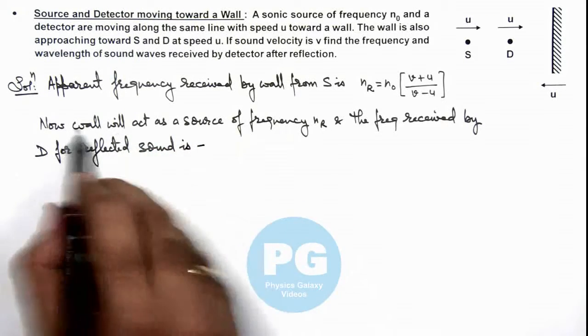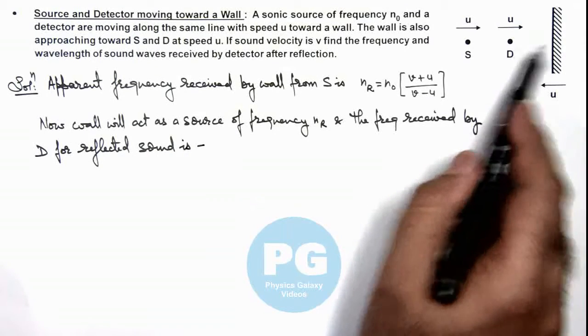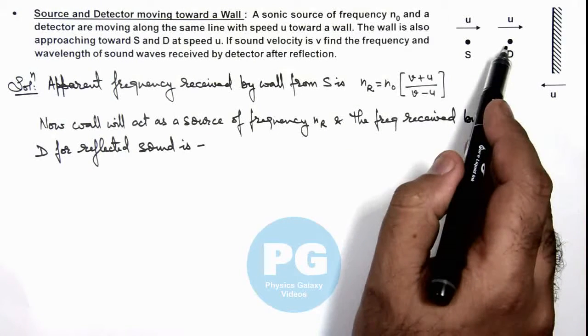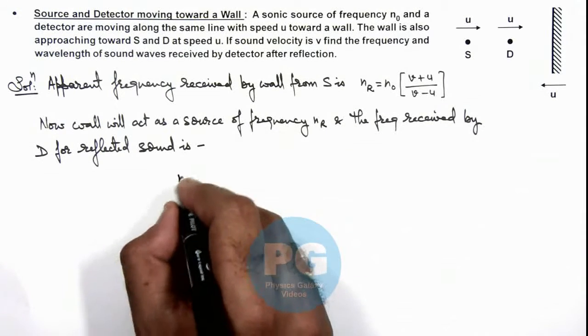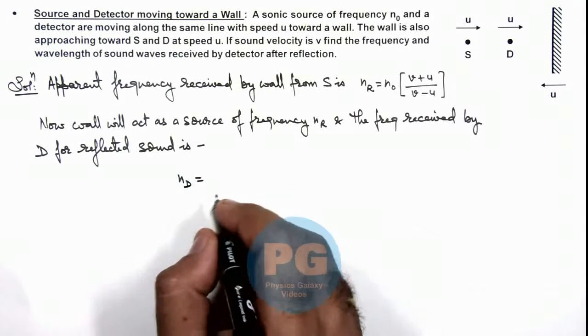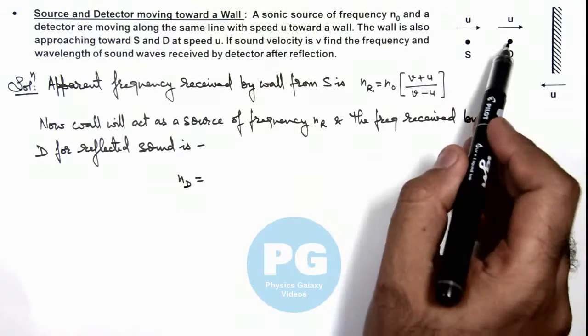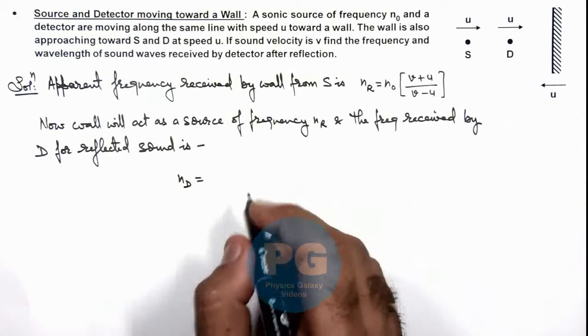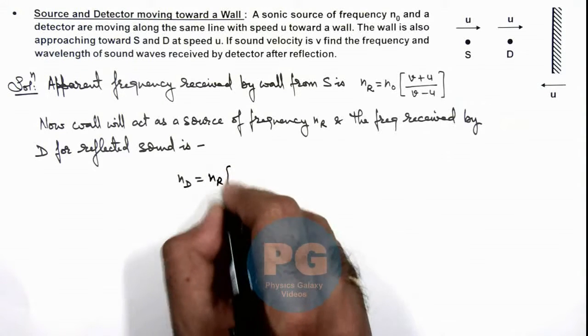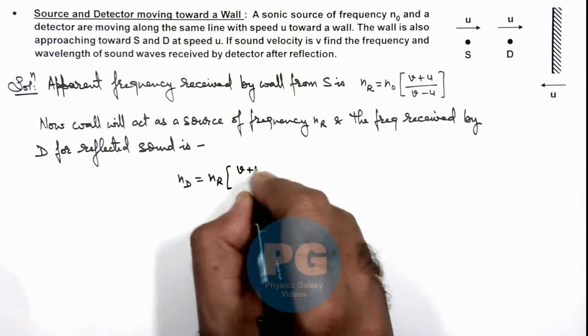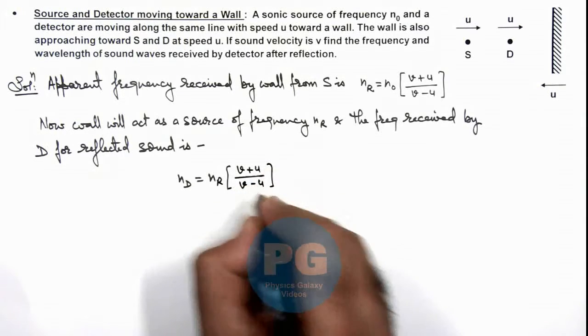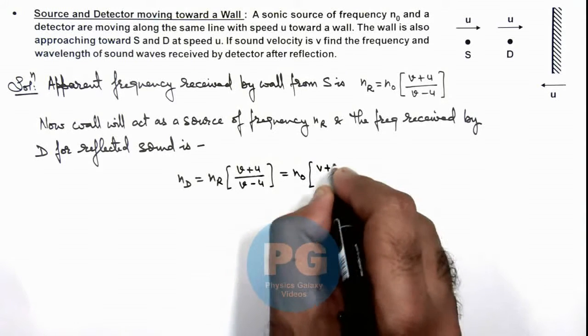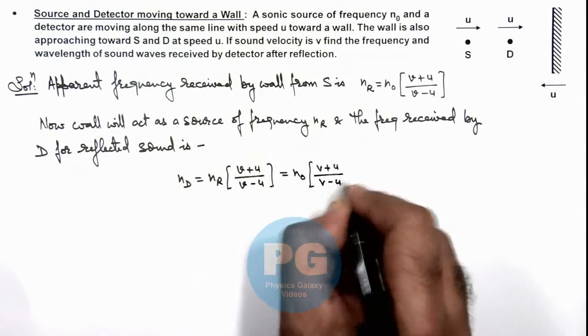As now wall is acting as a source and it is emitting the wave of frequency nᵣ which the detector is going to detect, then this can be given as nᴅ. Again we use the Doppler's formula. As detector is moving towards wall and wall is also moving toward detector, so this can be written as nᵣ multiplied by (v + u) upon (v - u). If we substitute the value of nᵣ, this gives us n₀ multiplied by (v + u) upon (v - u) whole square.